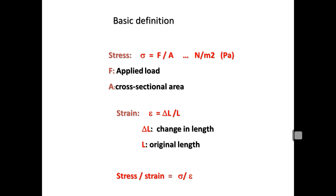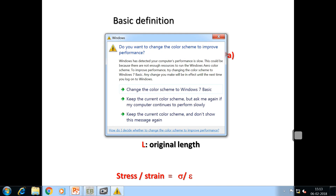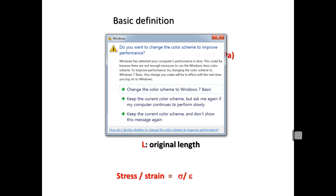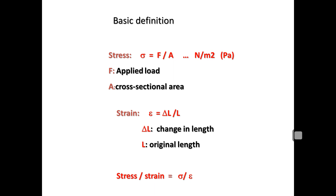In this lecture we'll focus on material properties. The first basic definition is stress. Stress is nothing but the internal force or internal resistance offered by the material per unit cross-sectional area. So stress Sigma equals F divided by A, and the unit is Newton per meter squared, which can be represented as Pascal. Here F is the applied force in Newtons and A is the cross-sectional area.